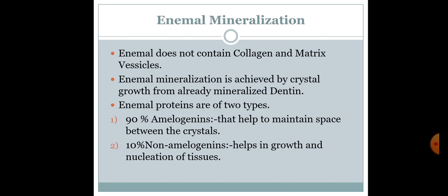Enamel mineralization: Enamel does not contain collagen and matrix vesicles. Enamel mineralization is achieved by crystal growth from already mineralized dentin. Enamel proteins are of two types: 90% amelogenins, which help maintain space between the crystals, and 10% non-amelogenins, which help in growth and nucleation of the tissues.